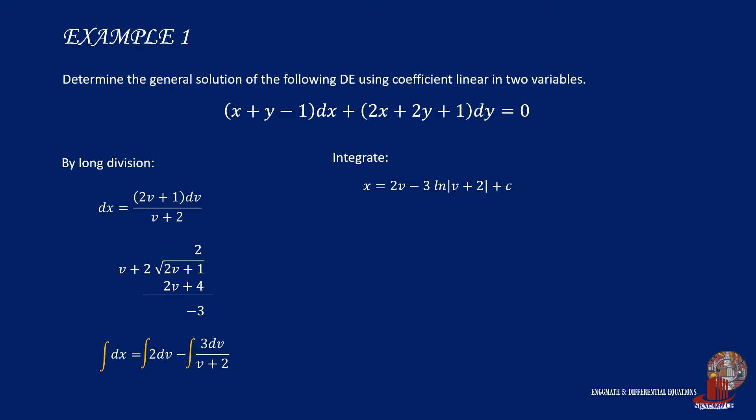The integral of 3dv all over v plus 2 will be negative 3 multiplied by the natural logarithm of v plus 2 and add c. Rearrange the terms to have the following equation.